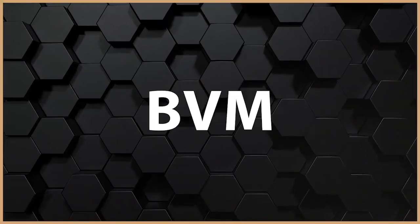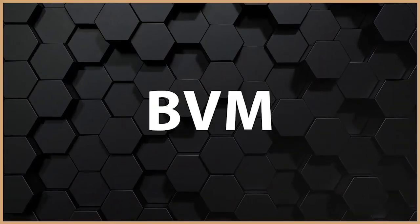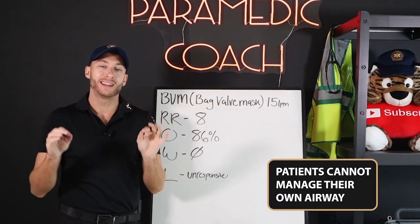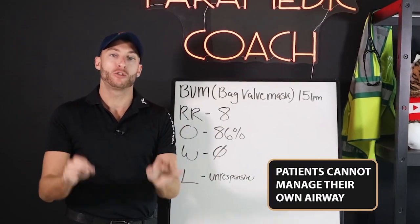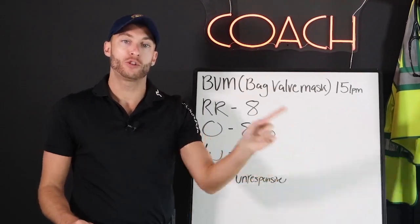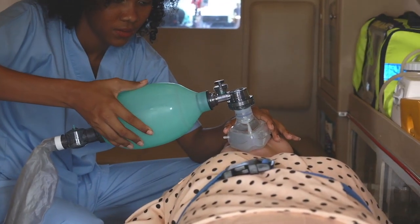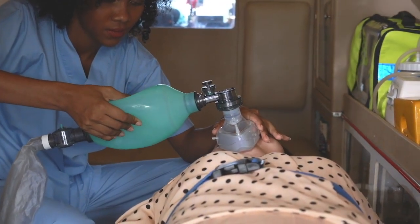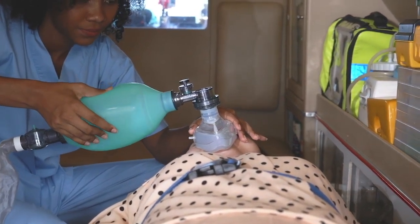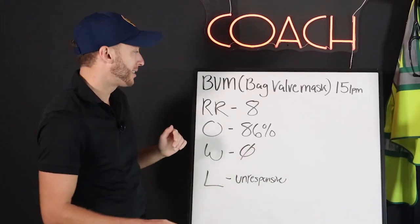With a BVM, your patient is unresponsive. They're unable to speak. They cannot manage their own airway. After BVM, I'm going to show you something that can help you when people are in that gray area between non-breather and BVM and how we can help them. We'll talk about that in a second.